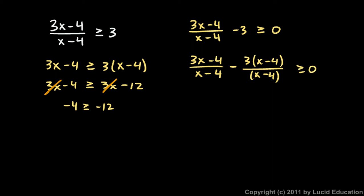But now we have the same denominator here and here, which means we can just combine the numerators. So I have 3x minus 4, and then I have minus 3x.